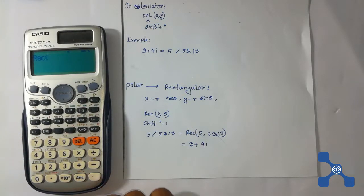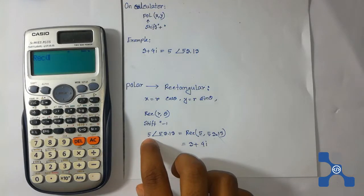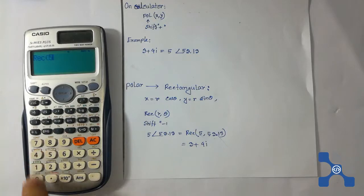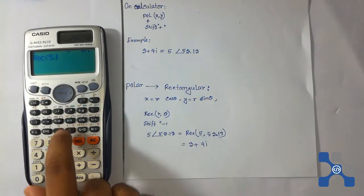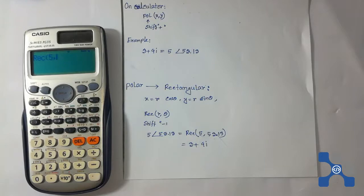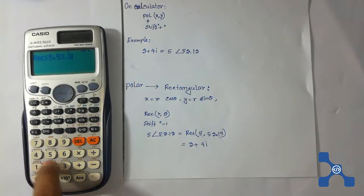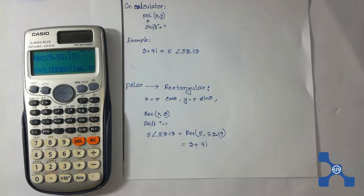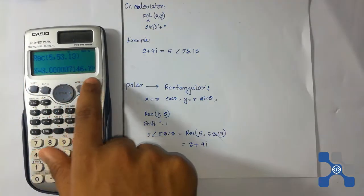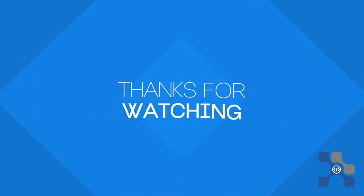Press shift and then the minus button for the REC function. Then press the value of r, which is 5, then press shift and the close bracket button. Then press the angle, which is 53.13. Then press the close bracket button and press equal. We see that the value of x equals 3.